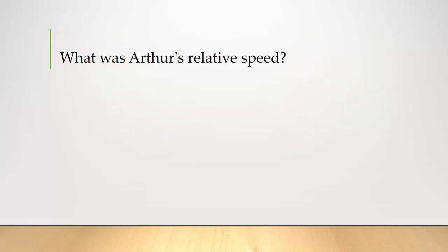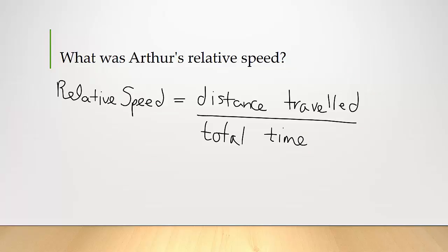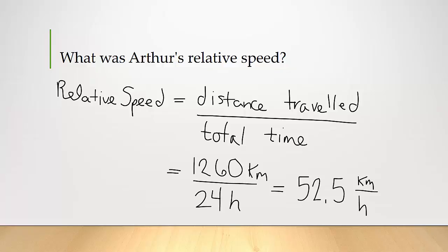What was Arthur's relative speed? The question already sets us up with all this information. The relative speed is the total distance traveled over the amount of time it took — 1,260 kilometers over 24 hours. So the relative speed is 52.5 kilometers per hour.